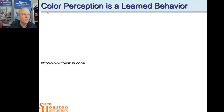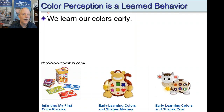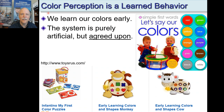Color perception is a learned behavior. As a parent, you could teach a child that red is blue and blue is red, because the words 'red' and 'blue' have no physical connection to the perception of color — it's a learned behavior. That's why we have children's toys that teach different colors. The system is purely artificial: these are just agreed-upon words for various sensory perceptions we have with our eyes.